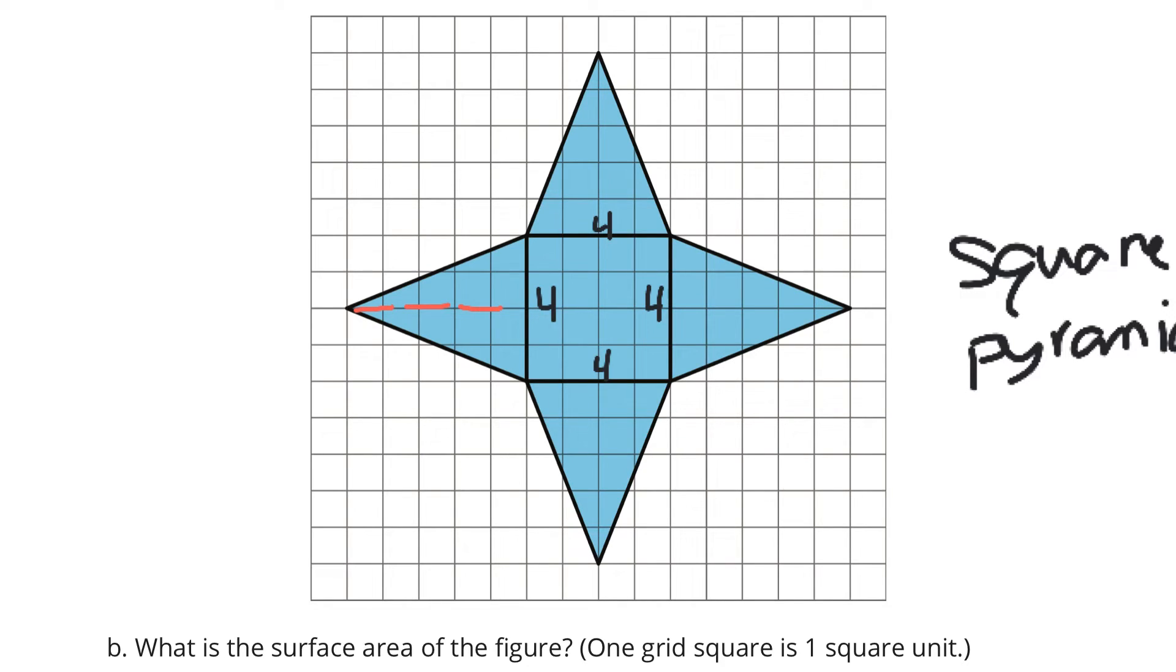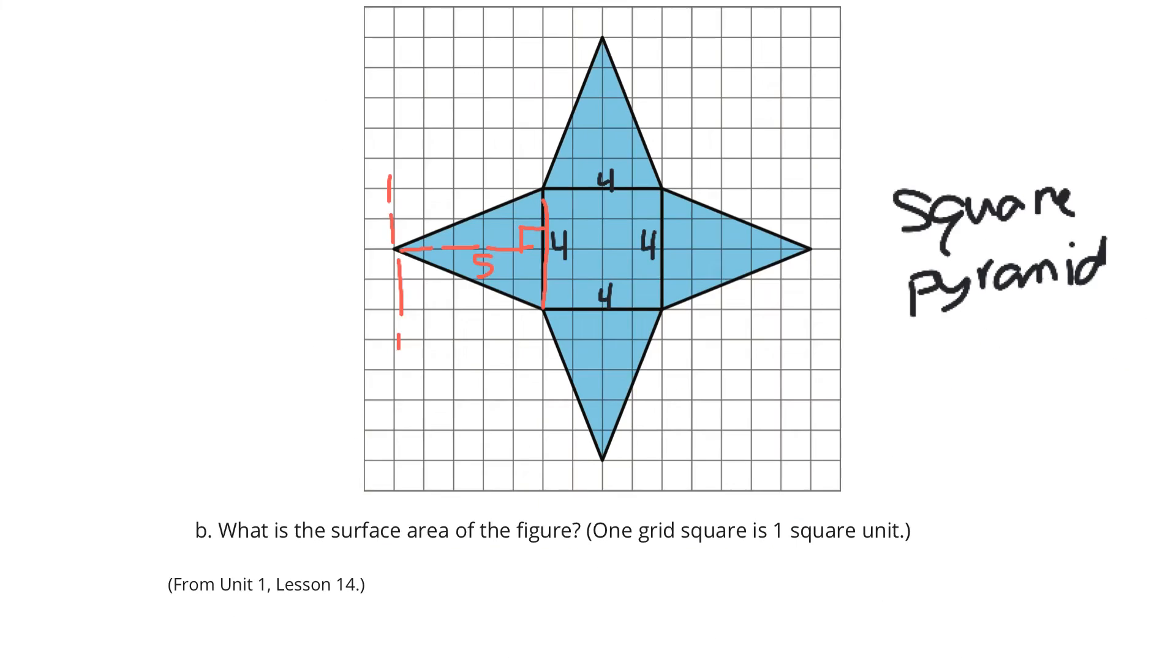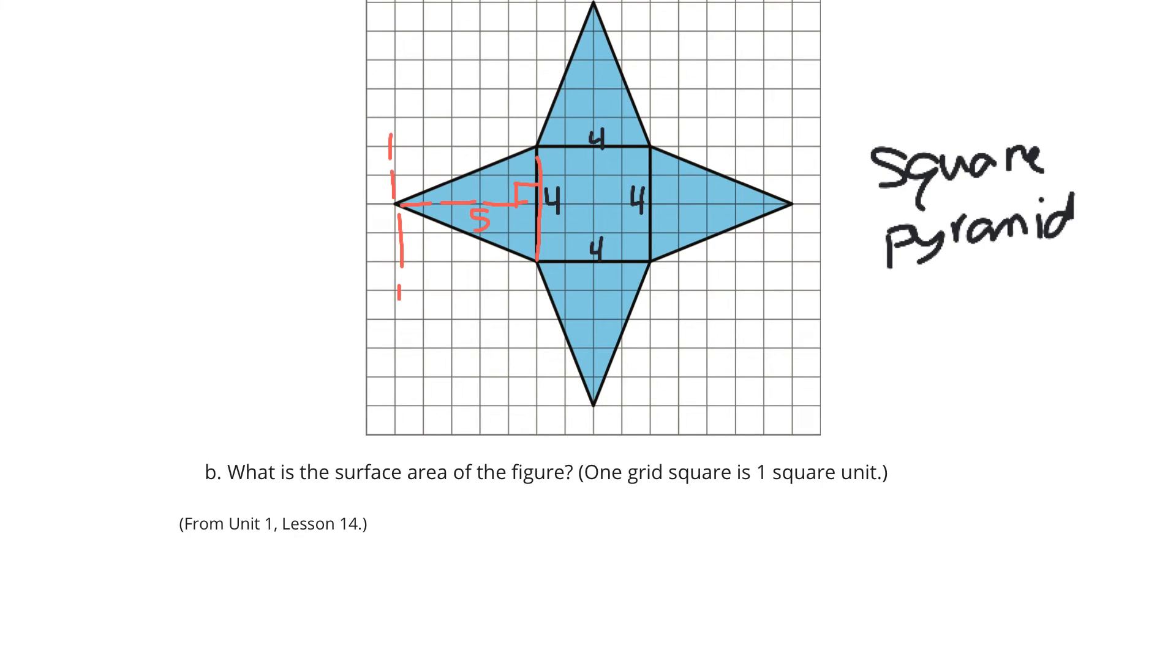The base is 4. Looking at my height here, it also is, well, 1, 2, 3, 4, 5. And so, our square is 4 by 4. So, 4 times 4 is 16 square units for the square.